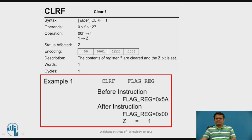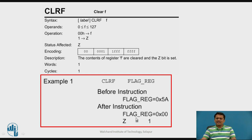Another operation is clearing a particular file register using CLRF. When writing programs using counters or variables, you need to initialize them to 0. This instruction clears any file register contents to 00. The zero flag is affected since the result is always 0. It is a single-word, single-cycle instruction. For example, CLRF FLAG: before execution contents are 5A; after execution they become 00 and the zero flag is set.